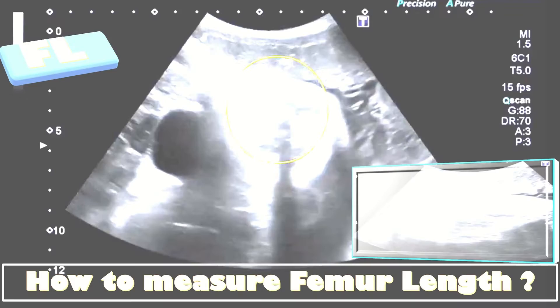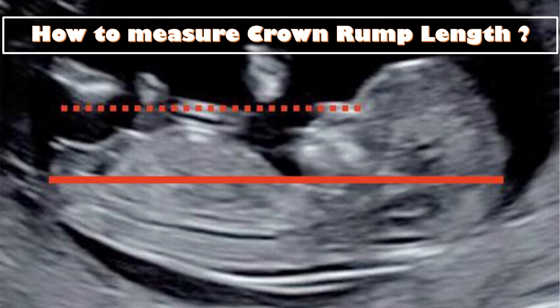The crown-rump length should be measured on the mid-sagittal section of the entire fetus. Ideally, the midline facial profile with a nasal bone, fetal spine, genital tubercle, and rump should all appear on a single image. The caliper should be placed on the outer border of the skin covering the crown and the rump.